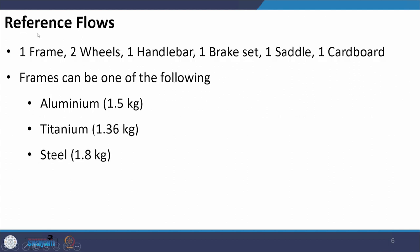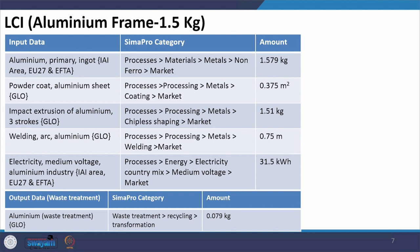The functional unit chosen for this study is the cycling of 100,000 kilometers over a lifetime of 15 years — a service-based functional unit. The bike consists of one frame (which can be aluminum, titanium, or steel — we will model all three and compare results) and two wheels. We will first build the inventory for a 1.5 kg aluminum frame using literature or industry sources.